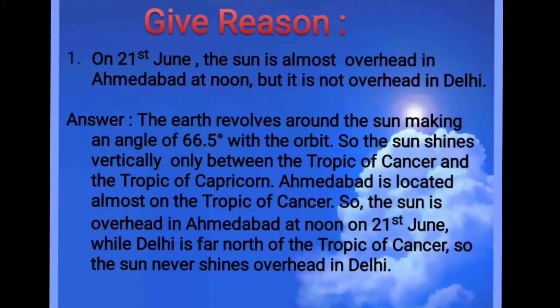Now let's look at one give reason. The question is: On 21st June, the sun is almost overhead in Ahmedabad at noon, but it is not overhead in Delhi. The answer is the earth revolves around the sun making an angle of 66.5 degrees with the orbit because the earth's axis is tilted and inclined. That is why the sun shines vertically only between the Tropic of Cancer and the Tropic of Capricorn.